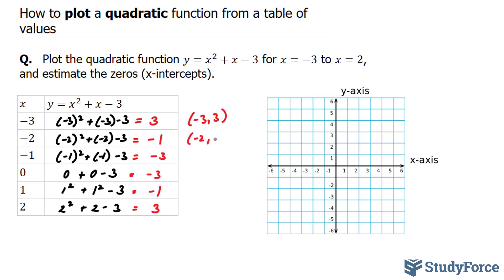Negative 2 and negative 1, and so on. Let's start off with the first point: negative 3 and 3, that's negative 3 and up 3. Negative 2 and negative 1, that's down here. Negative 1 and negative 3 over here. 0 and negative 3 is over here. 1 and negative 1 is over here. And lastly, 2 and 3 is up here.